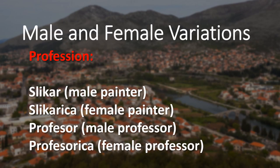In Bosnian language, you also want to keep in mind that gender is distinguished when talking about professions. For example, slikar is a male painter, while slikarica is a female painter. Profesor is a male professor, whereas profesorica is a female professor. The English equivalent of this would be actor versus actress, or waiter versus waitress.